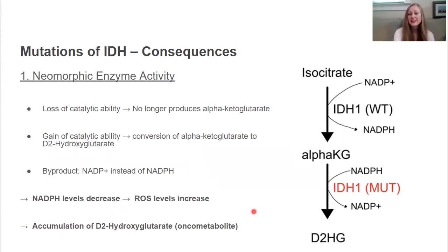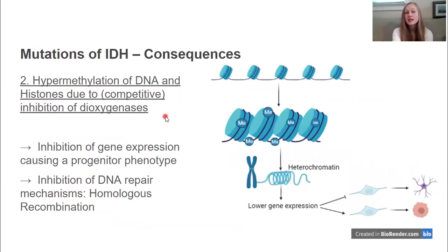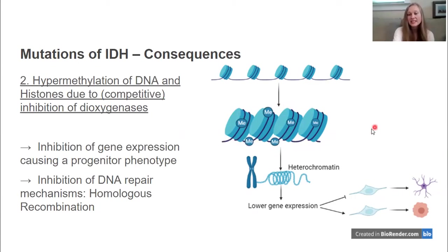D2-hydroxyglutarate accumulates as an oncometabolite responsible for the hypermethylation of DNA and histones, because it competitively and sometimes non-competitively inhibits the oxygenases normally responsible for demethylation of DNA and histones, leading to more condensed heterochromatin. This and the resulting lower gene expression have been linked to a progenitor-like phenotype that allows tumor cells to develop.